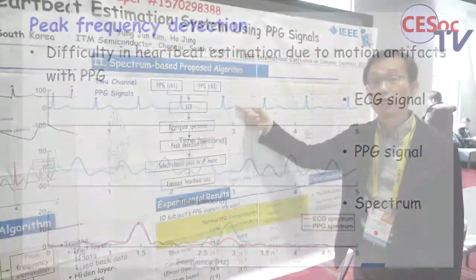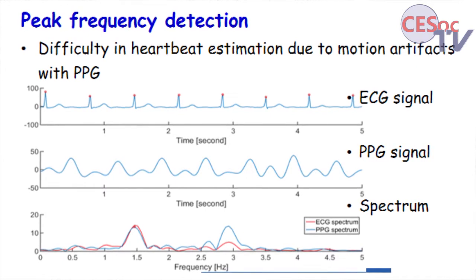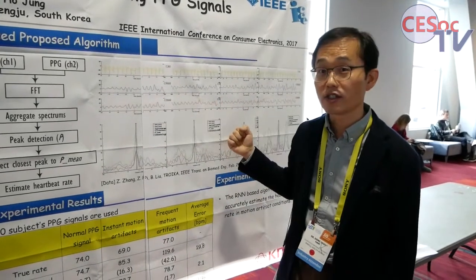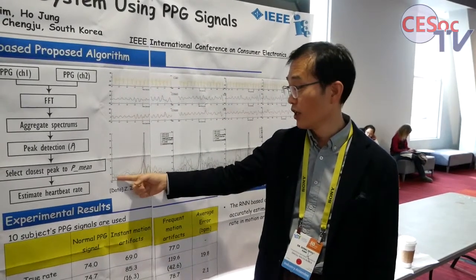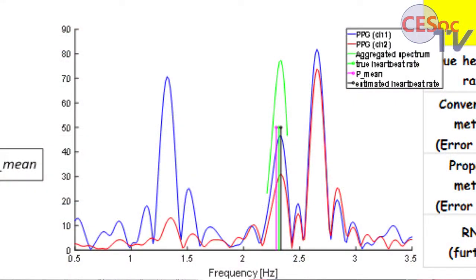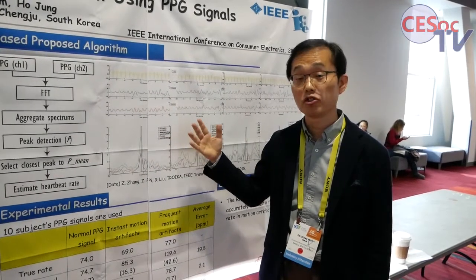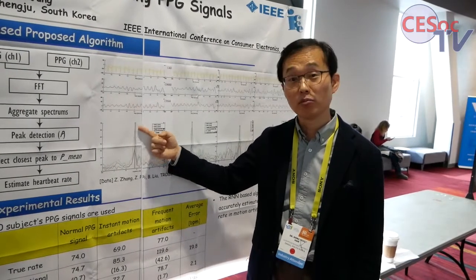This is a signal from the first sensor. This is a signal from the second sensor in the time domain. Sometimes the positions are different from those two sensors. What we are doing is first performing frequency domain analysis. This red color is the frequency domain result for this time domain sequence. In the stable condition, the peak signals appear at the same position, and we accumulate those two frequency signals at the same time to enhance and get the peak positions.